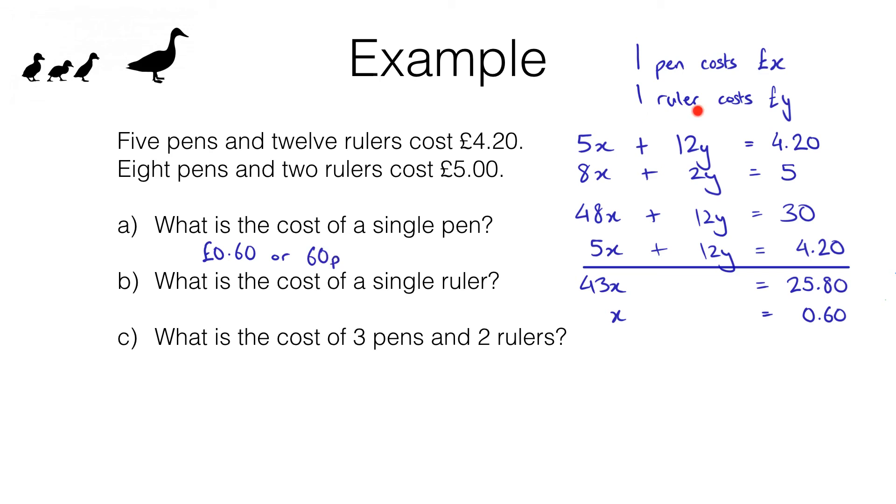To find the cost of a ruler, y pounds, we can substitute this x value into any of the previous equations. I'm going to pick this one because it seems easiest to work with. If x is 0.6 then 8x is going to be 8 lots of 0.6 which is 4.8.